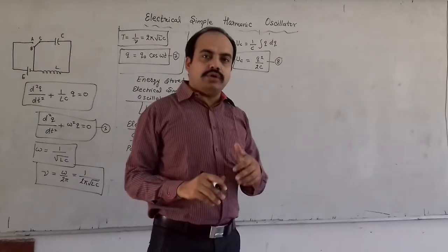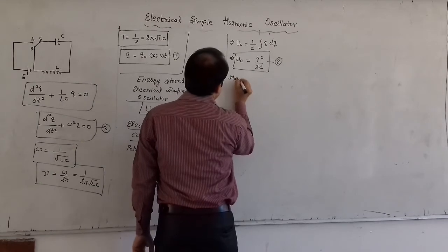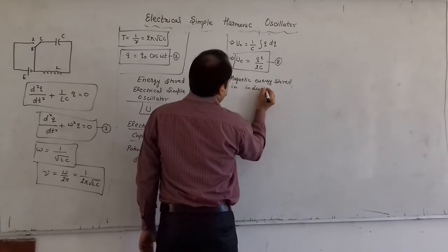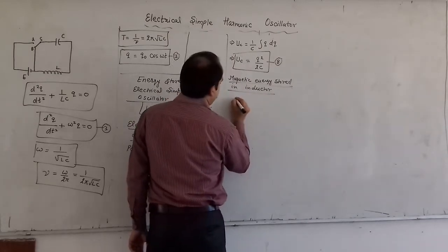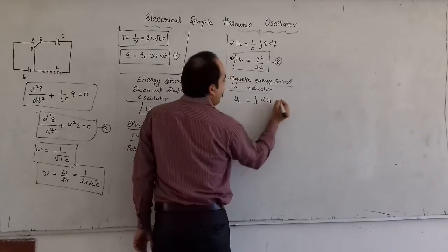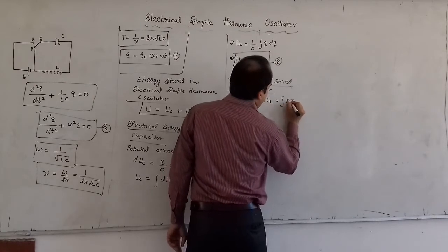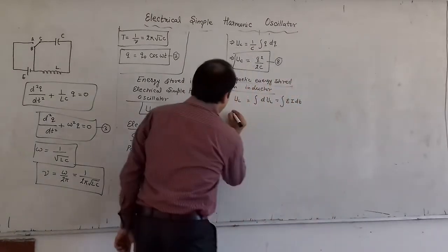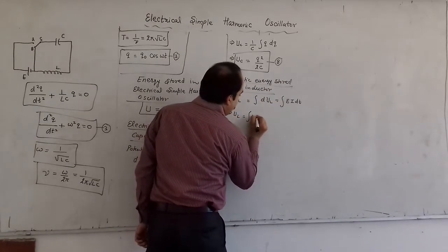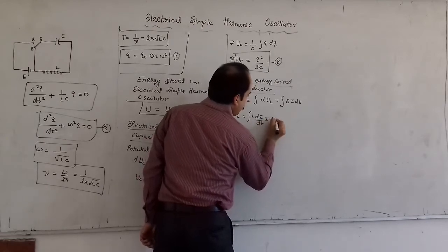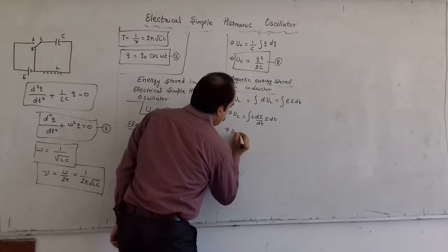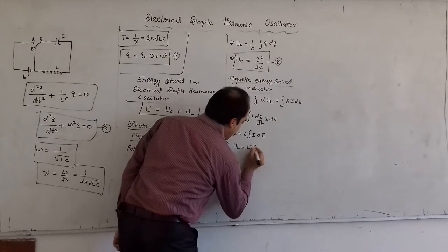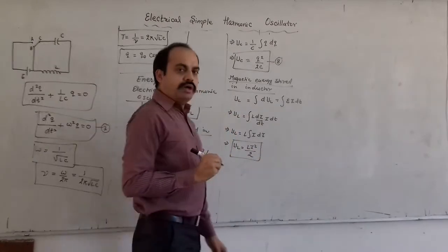Now we find the magnetic energy stored in the inductor. The magnetic energy UL = ∫E·I·dt, where E (the potential across the inductor) = L·dI/dt. So UL = ∫L(dI/dt)·I·dt. The dt cancels, giving UL = L∫I·dI, which integrates to UL = LI²/2. This is the magnetic energy stored in the inductor.